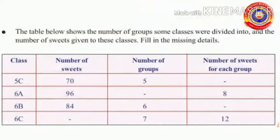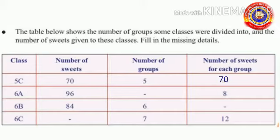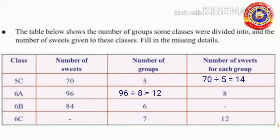Now we shall do a textual activity. The table below shows the number of groups some classes are divided into and the number of sweets given to those classes. Fill in the missing details. In class 5C, the number of sweets is 70 and the number of groups is 5, so sweets per group = 70 ÷ 5 = 14. In class 6A, sweets = 96 and sweets per group = 8, so number of groups = 96 ÷ 8 = 12. In class 6B, sweets = 84 and groups = 6, so sweets per group = 84 ÷ 6 = 14.